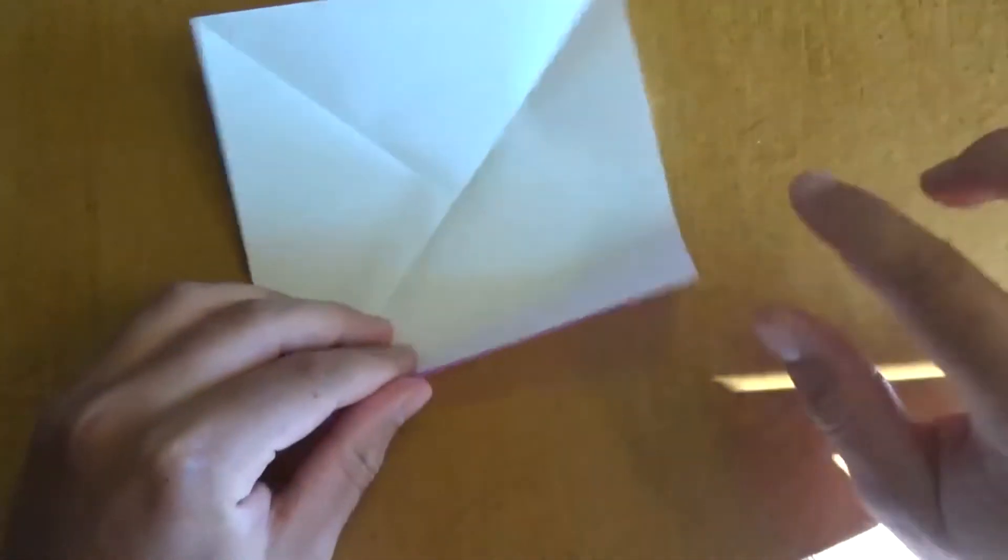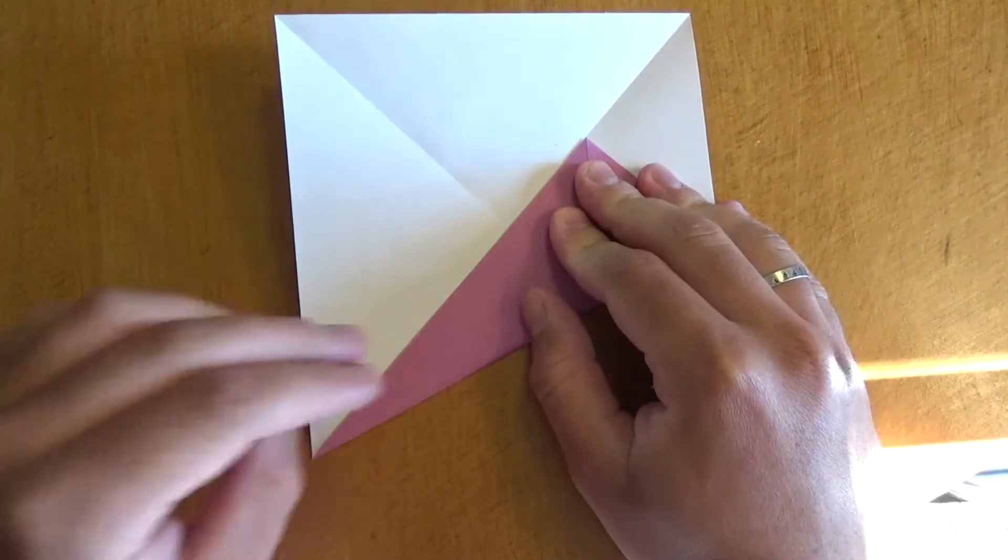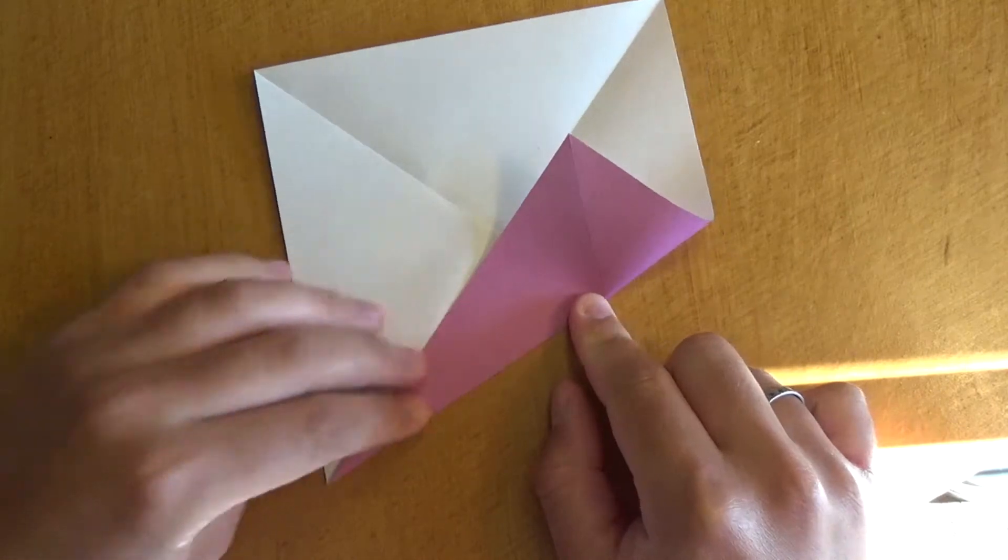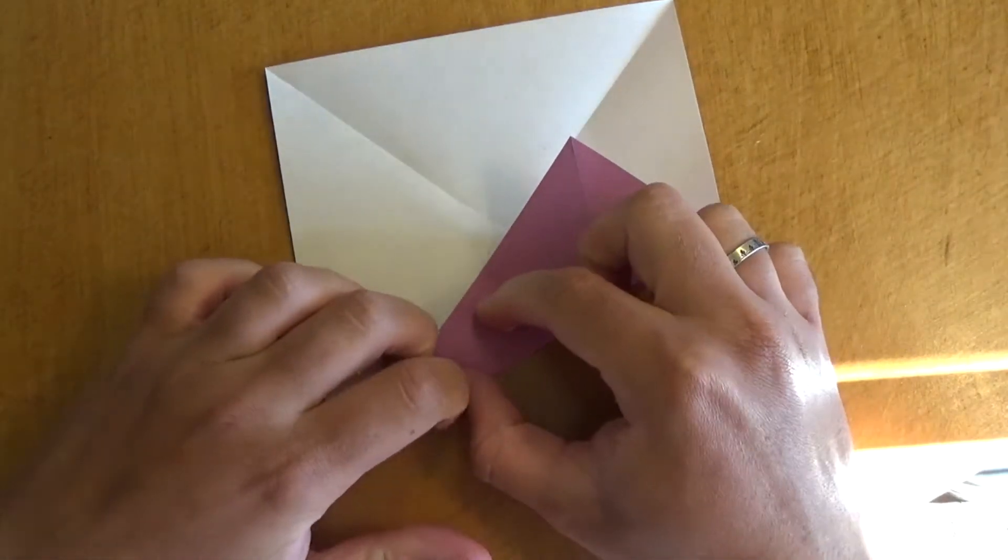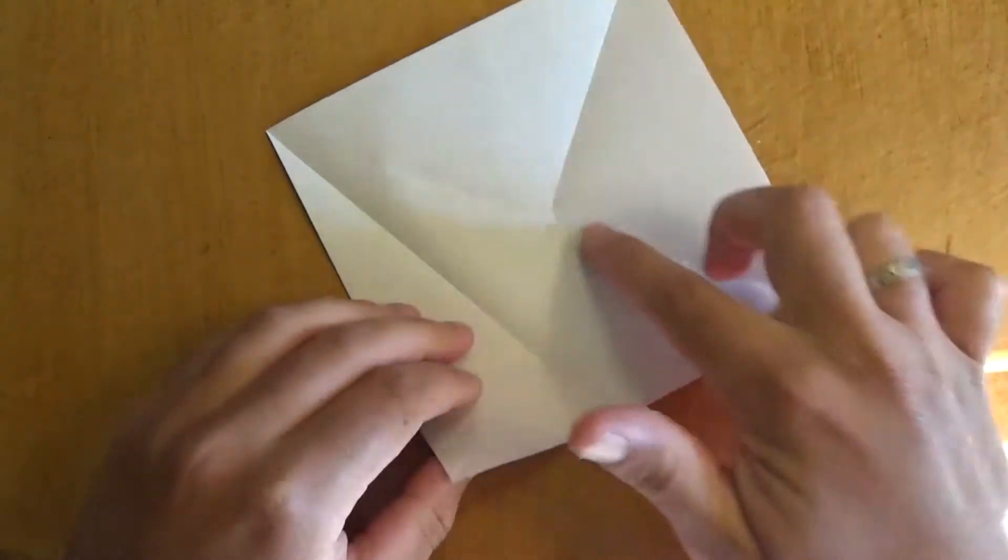And now fold this edge to the crease, and we're going to pretend like we're making a fish base, but we're not. And don't fold all the way, just fold to this crease right here. Okay, like that.